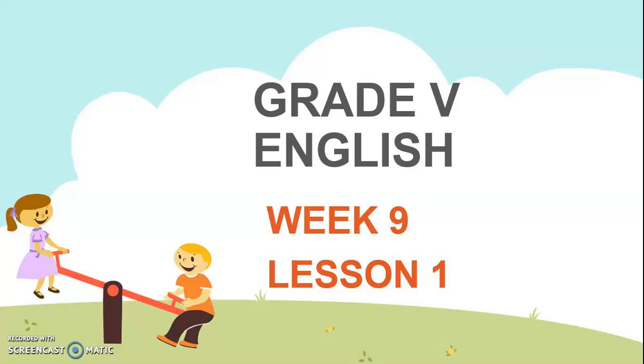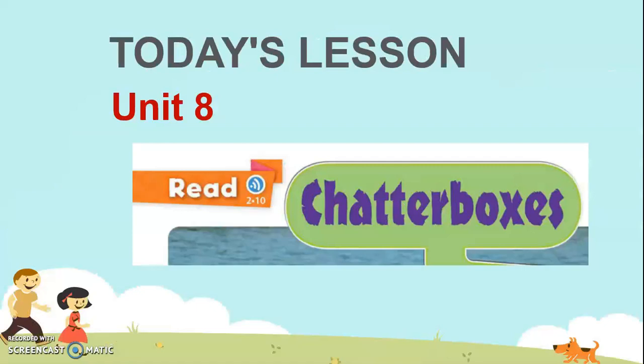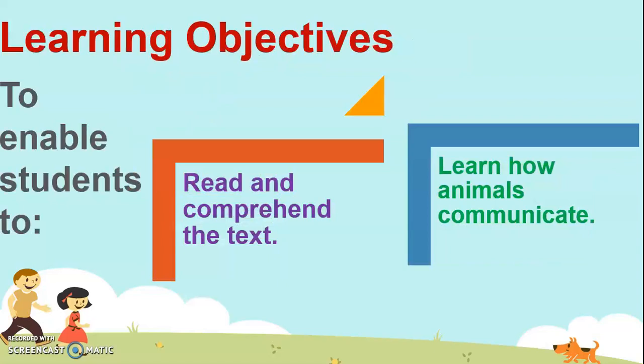Today we are going to start our Oxford Discover student book unit 8, and the name of the unit is Chatterboxes. Interesting topic, na. I hope you know who the chatterboxes are. I can name a few who are in my class, who talks all the time, who chatters all the time. Before starting our today's lecture, let's set some objectives. Today's objective is to make you able to read and comprehend the text and make you learn how animals communicate.